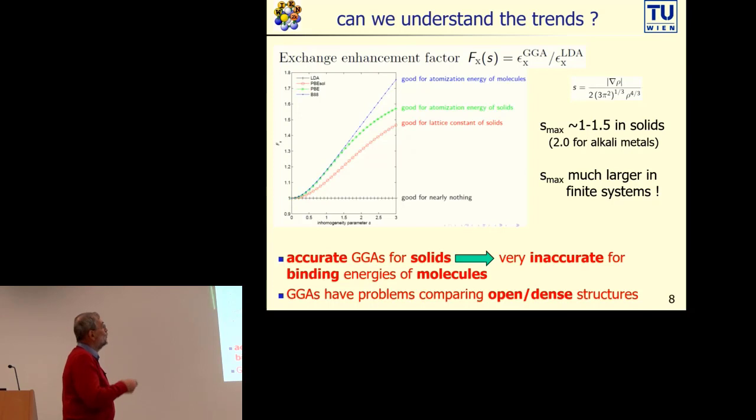Can we understand these trends? Yes, it's easy just to look basically at the enhancement factor. Here is the exchange enhancement factor. If the enhancement factor is relatively small, we call this a soft GGA, and this is usually good for lattice constant in solids. If it's intermediate, then this is good for atomization energy of solids. And if it's very hard, then it's best for atomization energy of molecules. With GGAs we are simply limited. We have no chance to switch over to different regions, while meta-GGAs may be able to switch dependent on this alpha or tau or the kinetic energy, switch from one enhancement factor to another, and therefore are much more flexible.